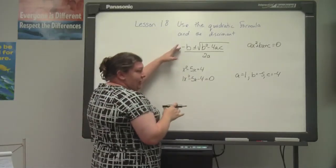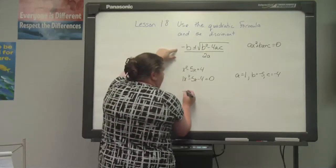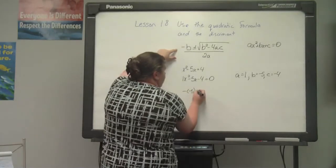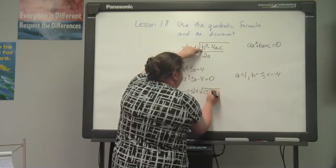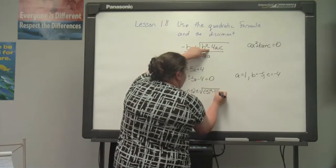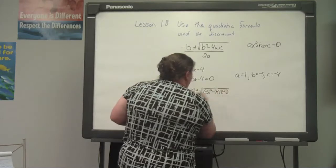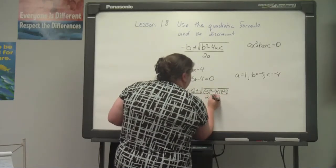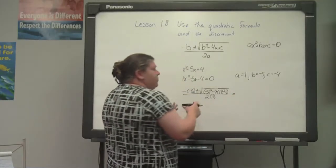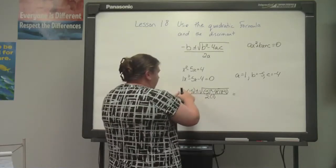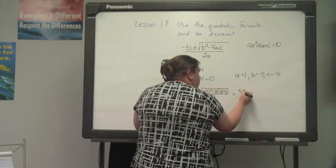From here I plug it into the quadratic formula. So I have negative negative 5 plus or minus the square root of negative 5 squared minus 4 times 1 times negative 4, all over 2 times 1. At this point we want to begin solving. A minus and a negative becomes a positive, so that ends up being 5 plus or minus.